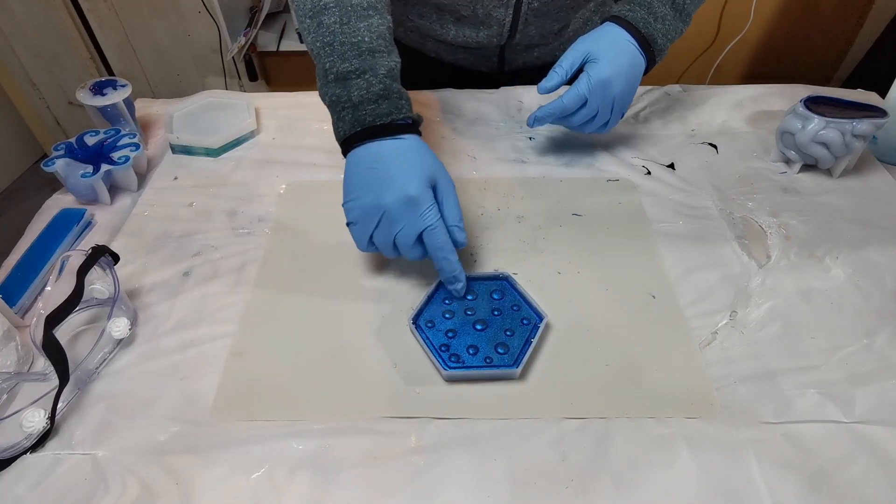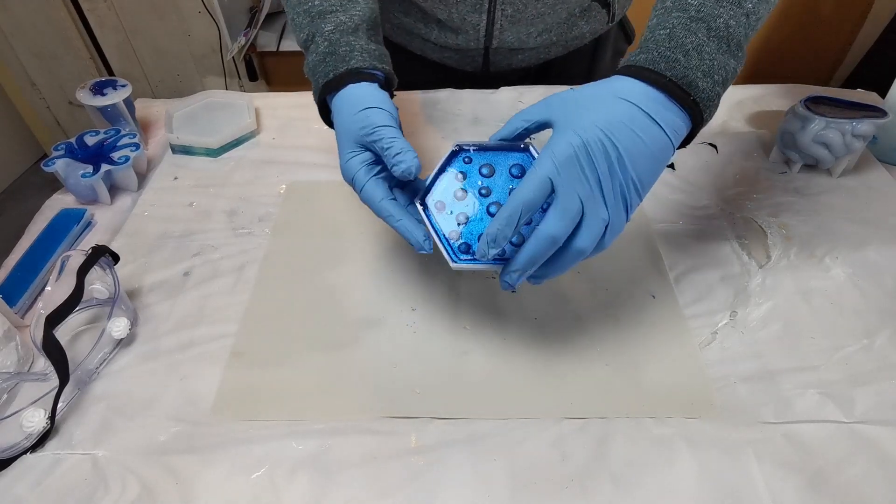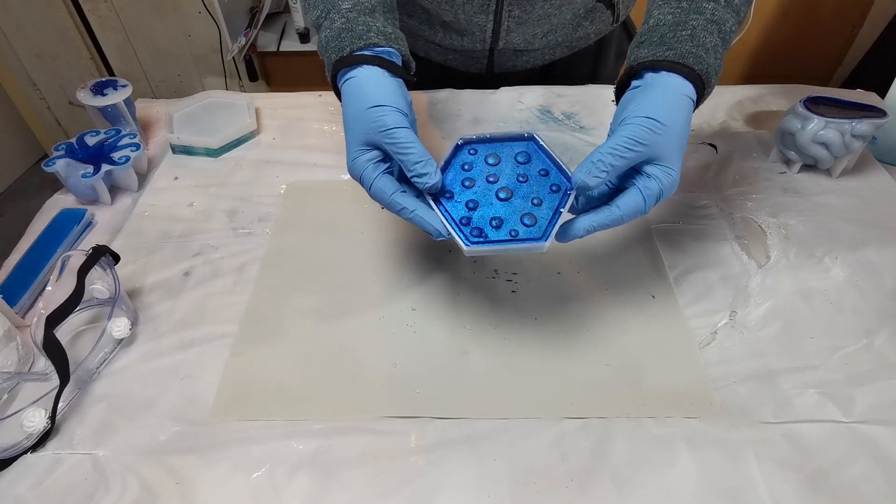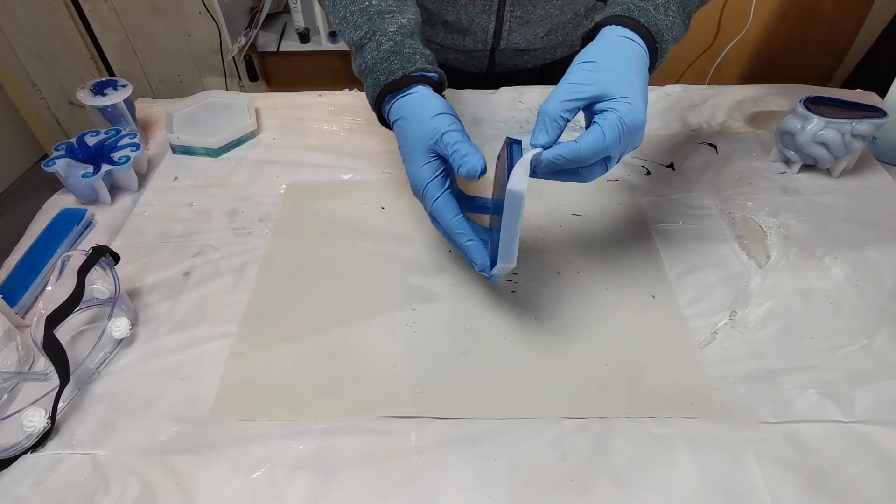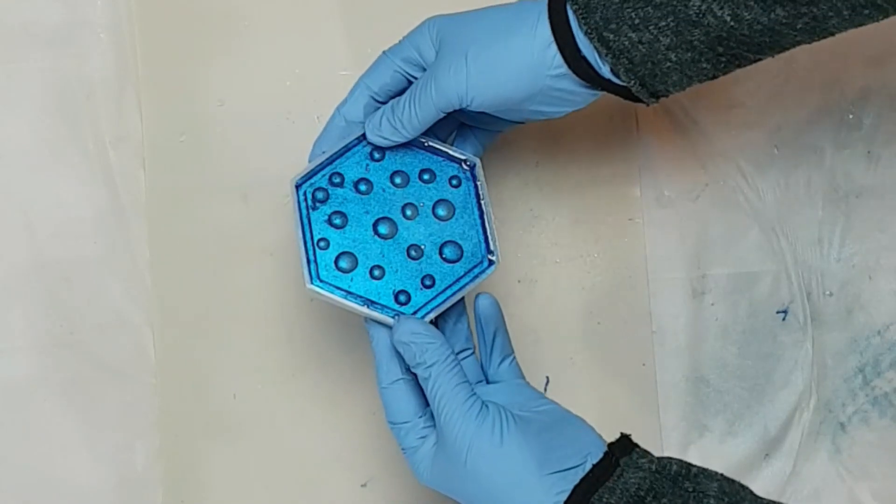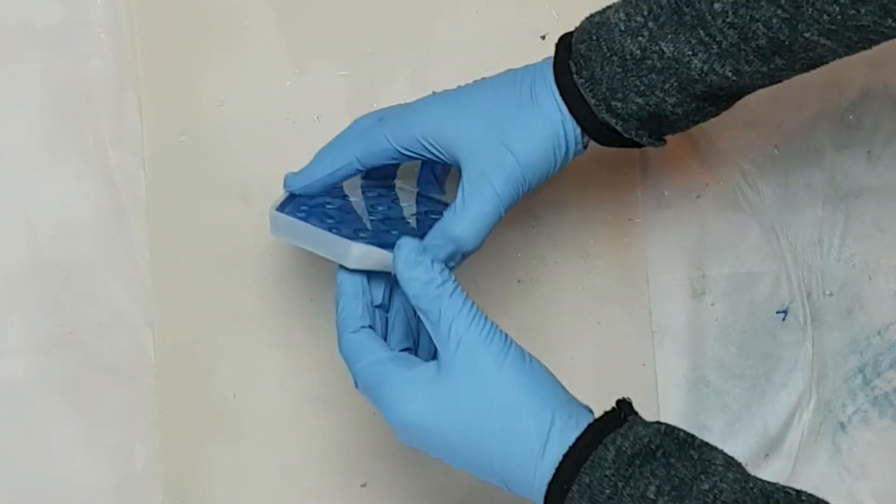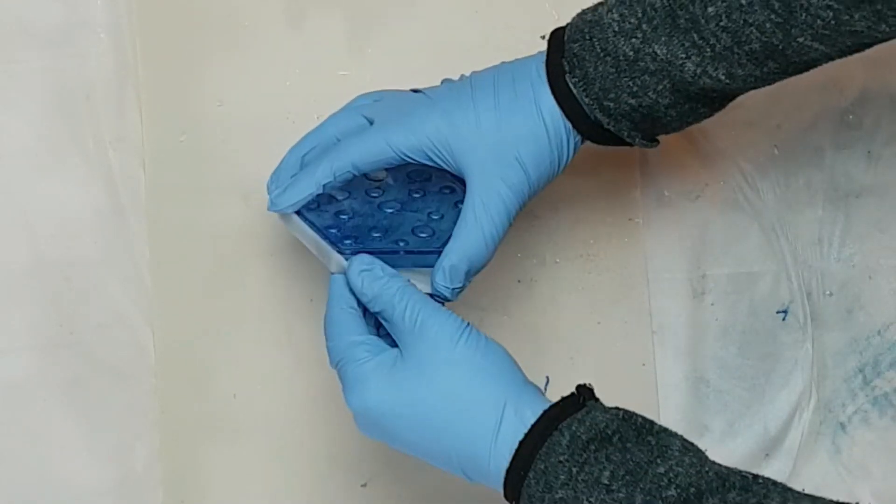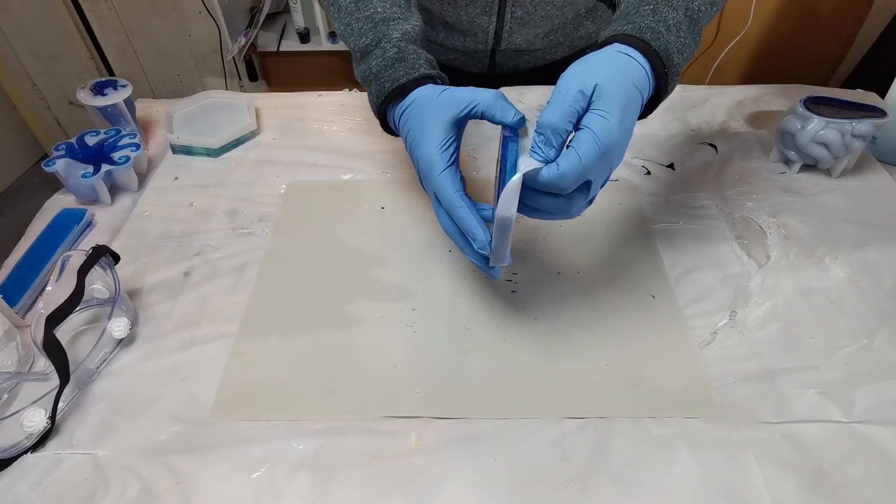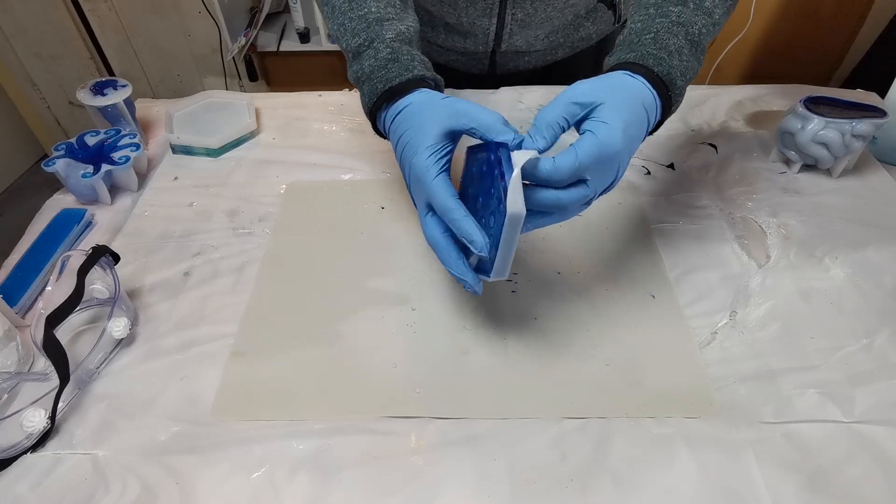On the next day, our resin is nice and hard and ready for demolding. This is the most exciting part of creating—if you create anything with a mold, taking that off and revealing the artwork is one of the best feelings. When you're looking at anything that you've put into the mold, you're always seeing the back of it. And even though that looks pretty stunning there, it's when you look at the front and see how that effect has come out, is when the real magic happens.